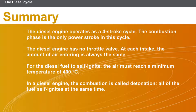In this section we covered the following points. The diesel engine operates as a four-stroke cycle, and the combustion phase is the only power stroke. The diesel engine has no throttle valve; at each intake, the amount of air entering is always the same. For the diesel fuel to self-ignite, the air must reach a minimum temperature of 400 degrees Celsius. In a diesel engine, the combustion is called detonation — all of the fuel self-ignites at the same time.